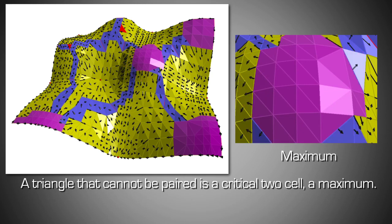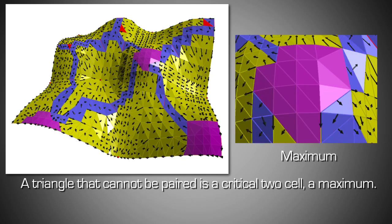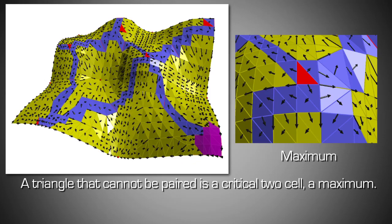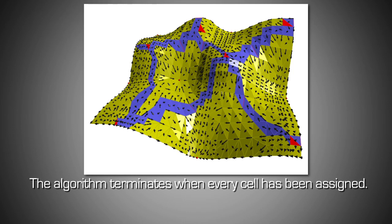A triangle that cannot be paired is a critical two-cell, a maximum. The algorithm terminates when every cell has been assigned.